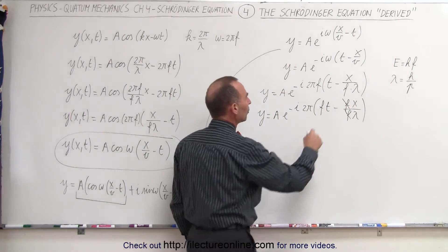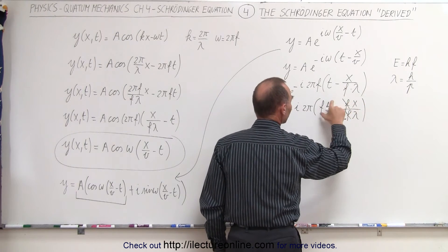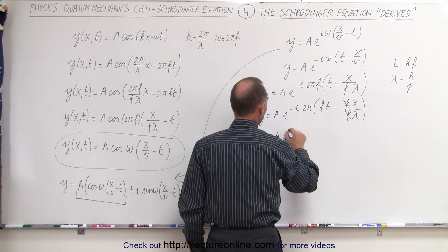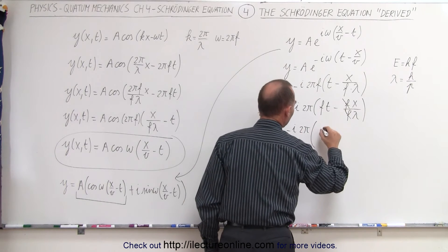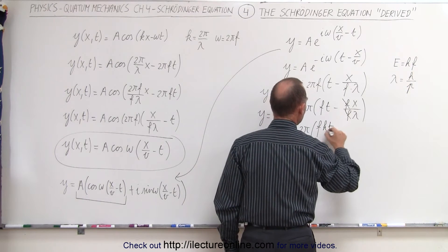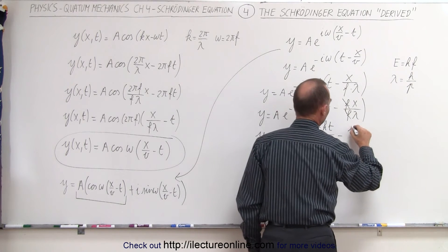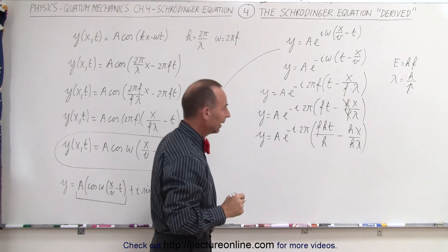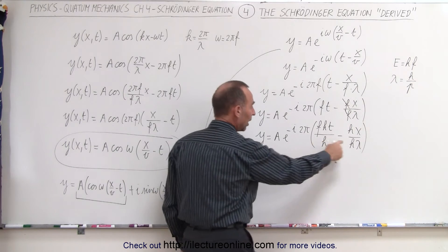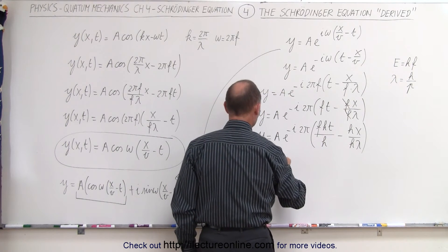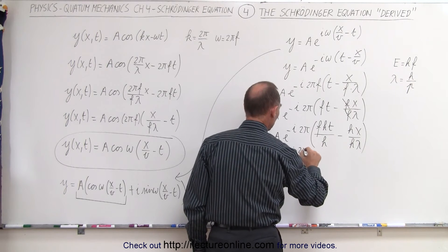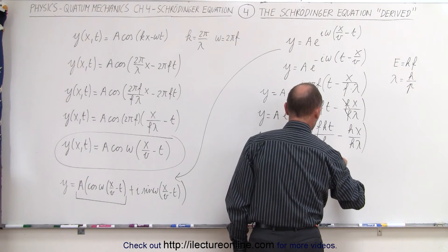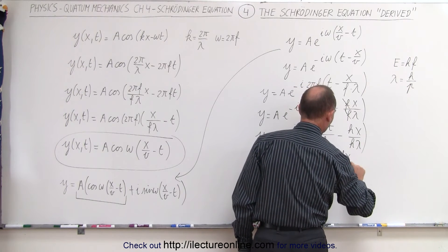And then we're going to multiply both the numerator and the denominator in both cases, in both terms, by h. So we have y equals A e to the minus i times 2π times fht over h minus hx over hλ. And then we can factor out an h in the denominator and put it over here. So this can be written as y equals A e to the minus i 2π over h times fht minus hx over λ.